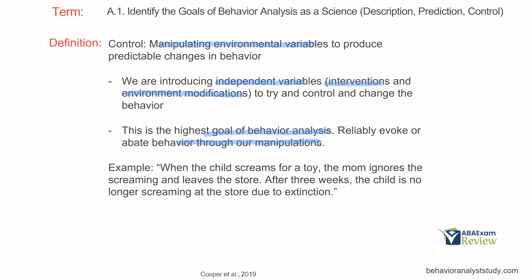Only if we can control behavior can we predictably change it. For example, when the child screams for a toy, the mom is now ignoring the screaming and leaving the store. Our independent variable — our manipulation — is extinction. After three weeks, the child is no longer screaming at the store due to extinction. We have established experimental control over that behavior. We have reliably changed it through the manipulation of environmental variables.